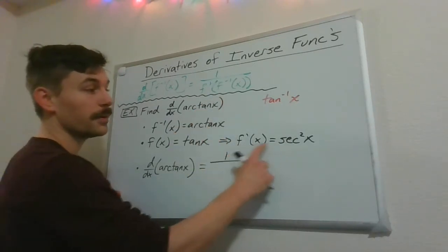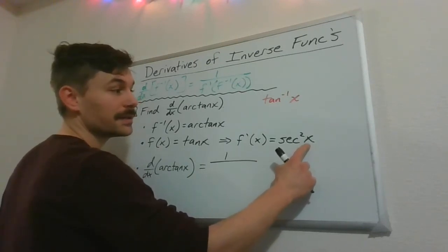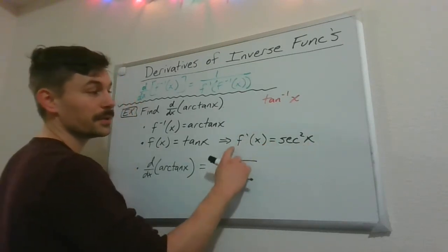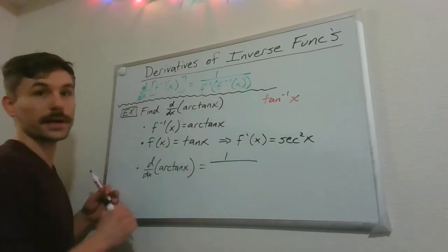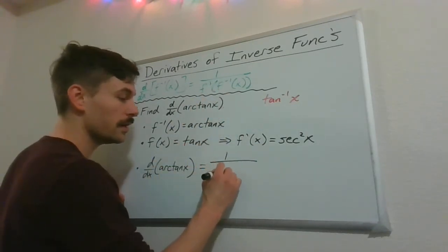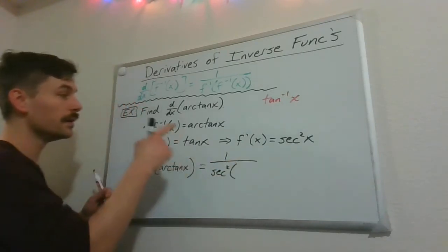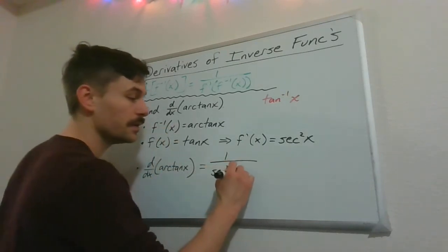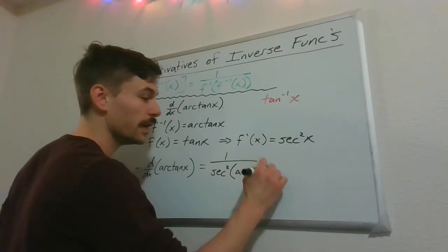So f prime was secant squared of x, but that x is going to be replaced. We're not just doing the regular f prime, we need to toss that f inverse in there. So this is going to be secant squared of our inverse function, arctan of x.